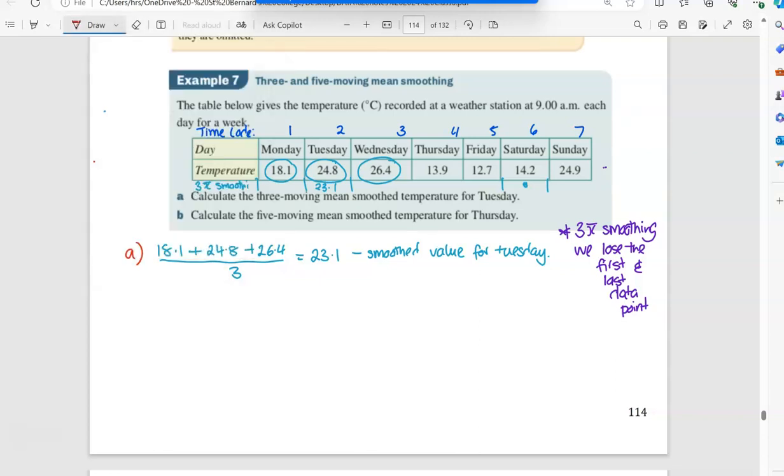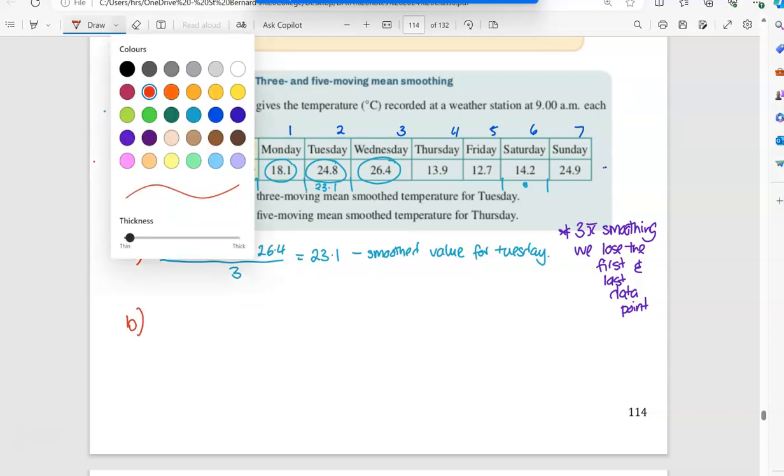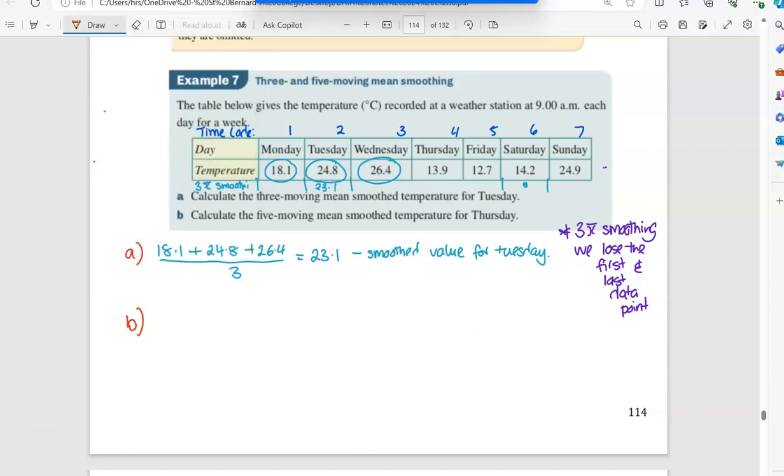So when we have three mean smoothing, we lose the first and last data point. Because once you get to Saturday, if I went to do Sunday, there's no other data after it, so I can't get a smooth value. Then in question B, they decided they want you to try and do a five mean smoothing for Thursday. So Thursday, because it's five, I'm going to go two below it and two above it. So it would be 24.8 plus 26.4 plus 13.9 plus 12.7 plus 14.2. And then if I divided that by five, it would be 18.4.